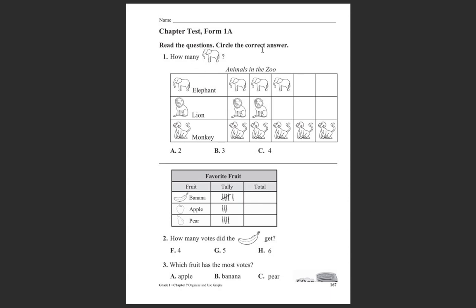All right, so let's read this. It says read the questions and circle the correct answer. How many elephants are there? So here we have animals in the zoo. Here are the elephants, here are the lions, and here are the monkeys. What you're going to do is count how many elephants there are over here. You are not going to be counting this elephant plus this elephant plus this elephant. You are only counting the elephants over here. So count the elephants and circle which answer makes sense to you.